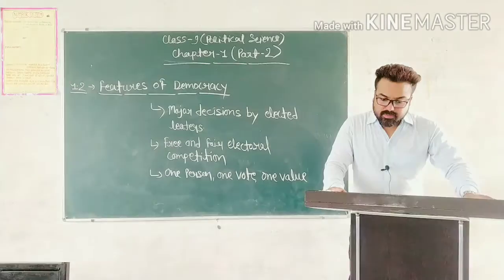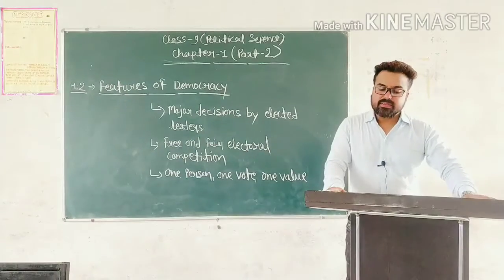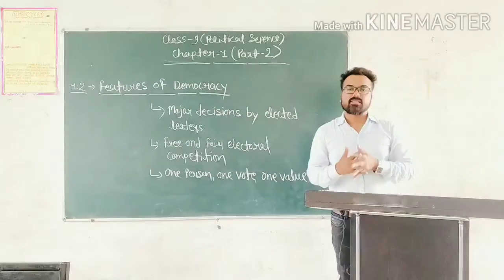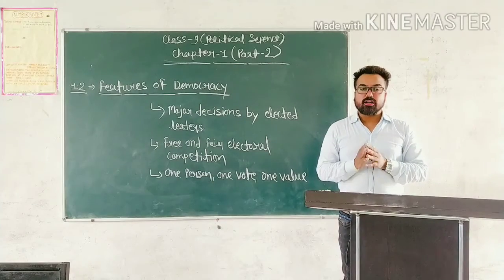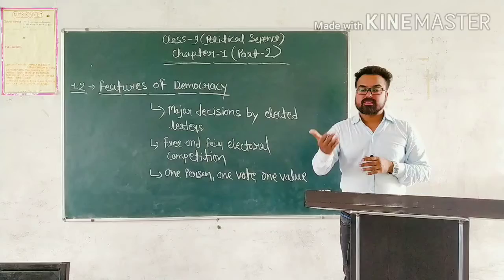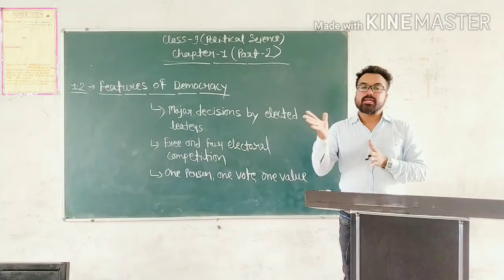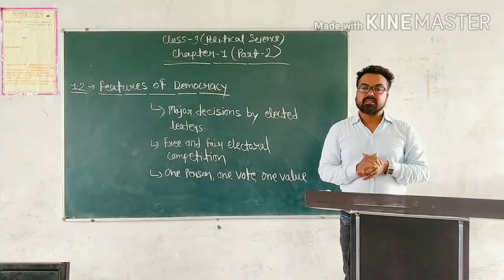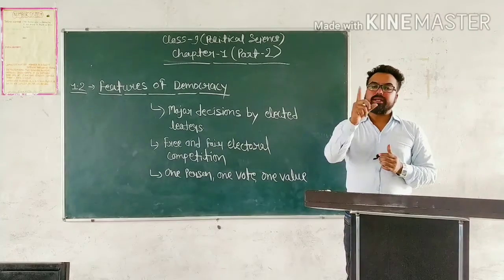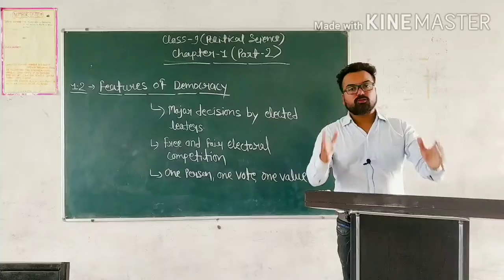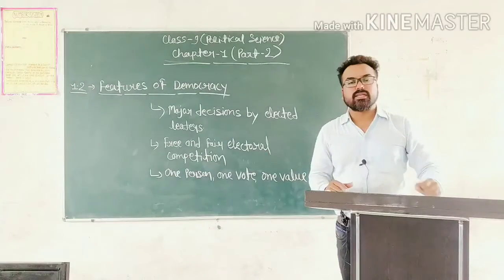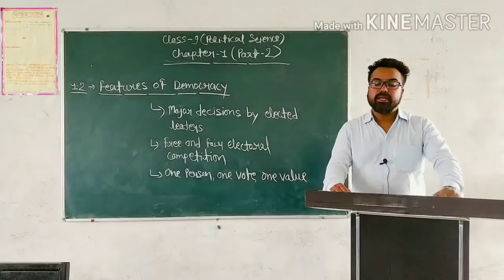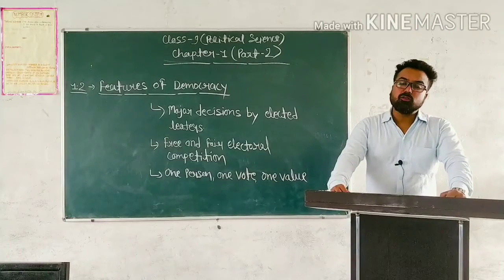انہوں نے general assembly اور provincial assembly کو بھنگ کرنے کی طاقت اپنے پاس لے لی۔ The work of the civilian cabinet — منتری پرشد کا کام — کچھ army کے officers کے ہاتھ میں دے دیا۔ Elected persons کو یہ لوگ نیوکت کرتے تھے — کون سے person کو چنا جائے کون سا نہیں۔ یہ democratic کے خلاف تھا۔